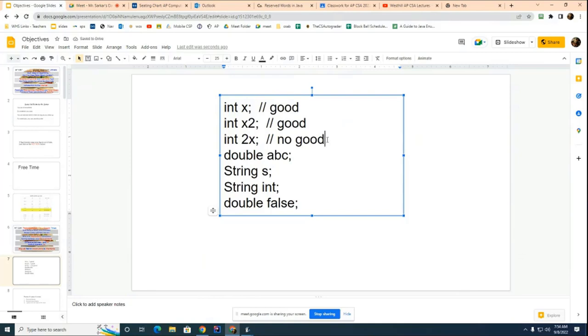Next person up is Mr. Dominic sir, how do you feel about 2x? No good. And Dominic, can you tell me how come x2 is good and 2x is no good? Okay, so there's a rule in Java that your variables cannot start with a number. It's just a rule to help the compiler keep from getting confused. You can use numbers in your variable name but they can't be the first digit. That's just a rule that you have to know.